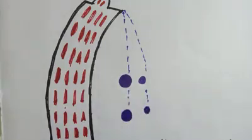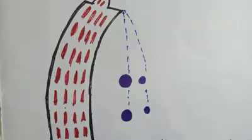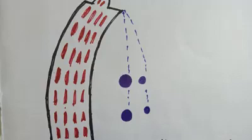Good evening. In this particular video, what I am going to demonstrate is Galileo's famous experiment on the Leaning Tower of Pisa. In the previous video on acceleration due to gravity, I had made a mistake and my sincere apologies for that. In this video, I would like to show the corrections and demonstrate a few more things on acceleration due to gravity.